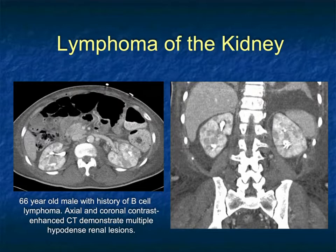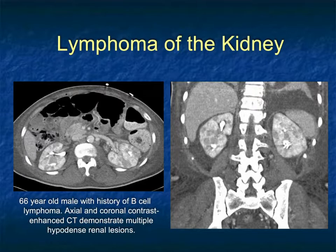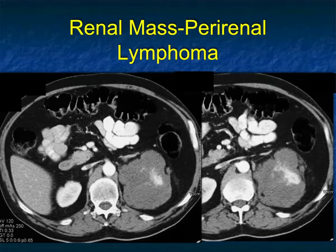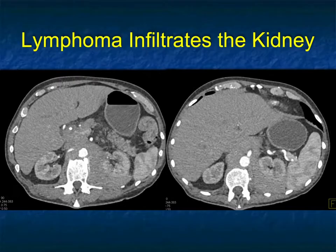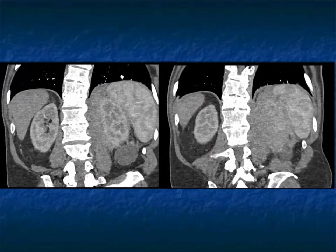Lymphoma does not always enlarge the kidney. Here's an example with multiple hypodense lesions infiltrating the entire kidney, yet the kidney is not really enlarged. Another example of perirenal space involvement: renal cell is not going to look like this, TCC is not going to look like this, metastases are not going to look like this — this is classic lymphoma with perirenal space involvement. Here's another example: infiltration of the kidney, perirenal space, and extensive periaortic adenopathy — B cell lymphoma — with the coronal view showing the full extent of involvement.